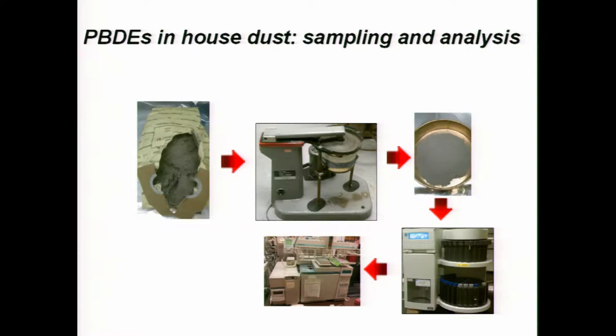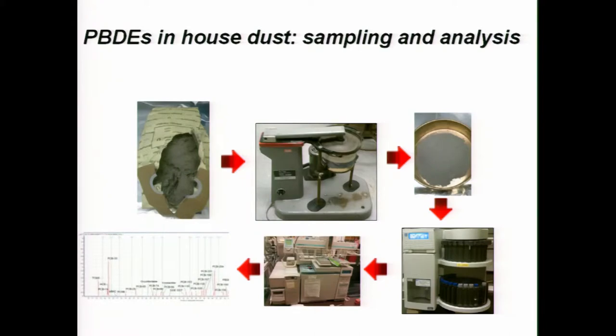So we used a couple of different instruments, one that was on campus here in Stanley Hall and some additional instruments that are down at the California Department of Toxic Substances Control, which is a state lab off campus. The PBDEs were analyzed at that lab using high-res mass spec. And you get something like this, a spectrum with a bunch of different PBDEs and a bunch of different PCBs as well.